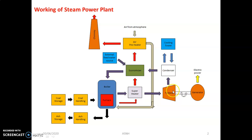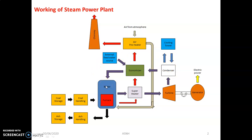Further, that expanded steam enters the condenser. In the condenser, the latent heat of condensation takes place and the cooling water is supplied in the condenser shell. That steam gets converted into water, and the same water is continuously supplied to the boiler. This is the basic working of the steam power plant. Here you will get an idea about three important components: superheater, economizer, and air preheater.